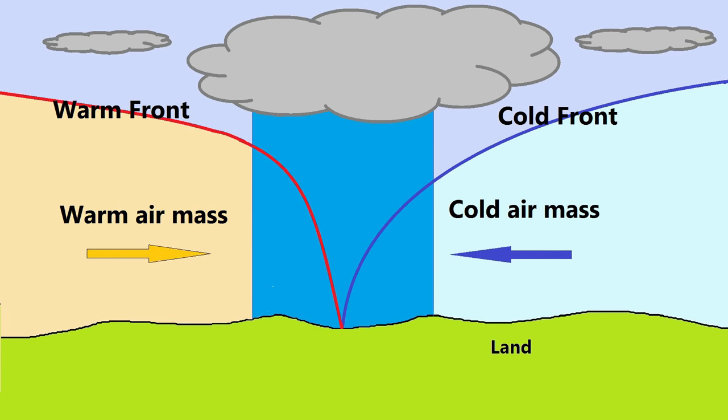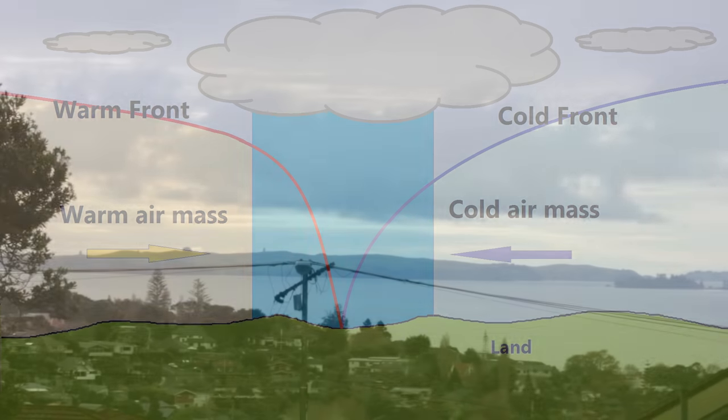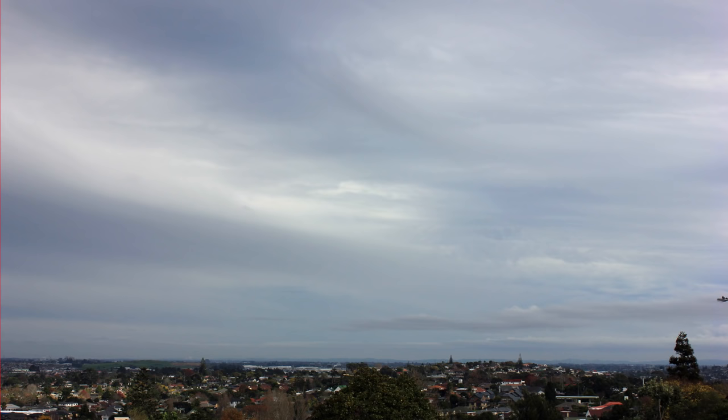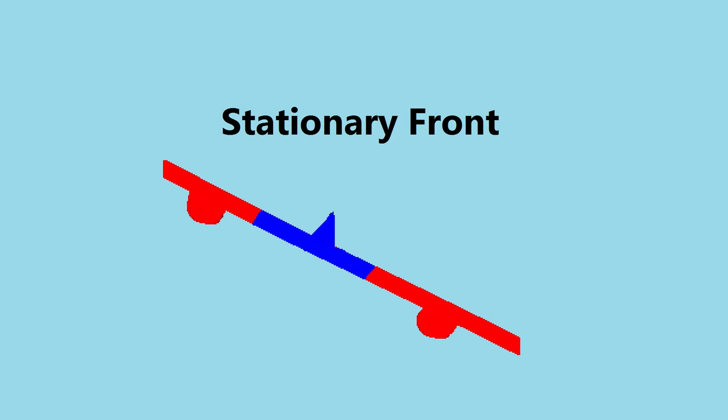A stationary front is the boundary between two air masses which are not moving — neither mass is strong enough to move the other. Therefore, a stationary front can be pushing back and forth over a given area for days. It is represented as alternating warm and cold front symbols.